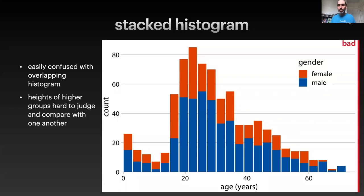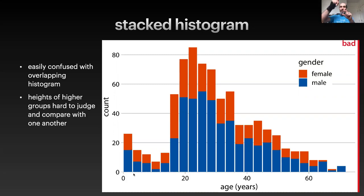Now we have that data broken out into both male and female gender. This initial visualization is called a stacked histogram, where we draw the histogram of the male data and then draw the histogram of the female data and literally put those bars on top of the first set of bars in a different color.